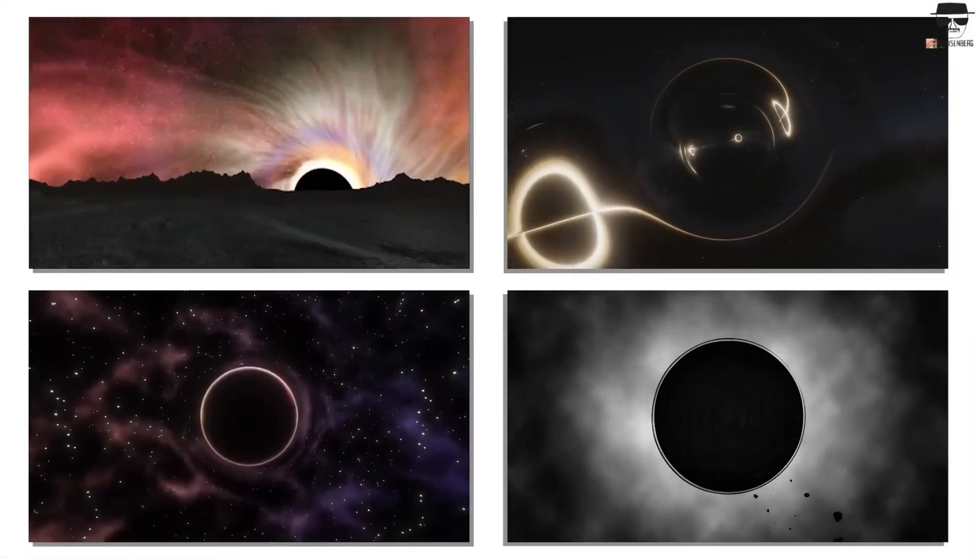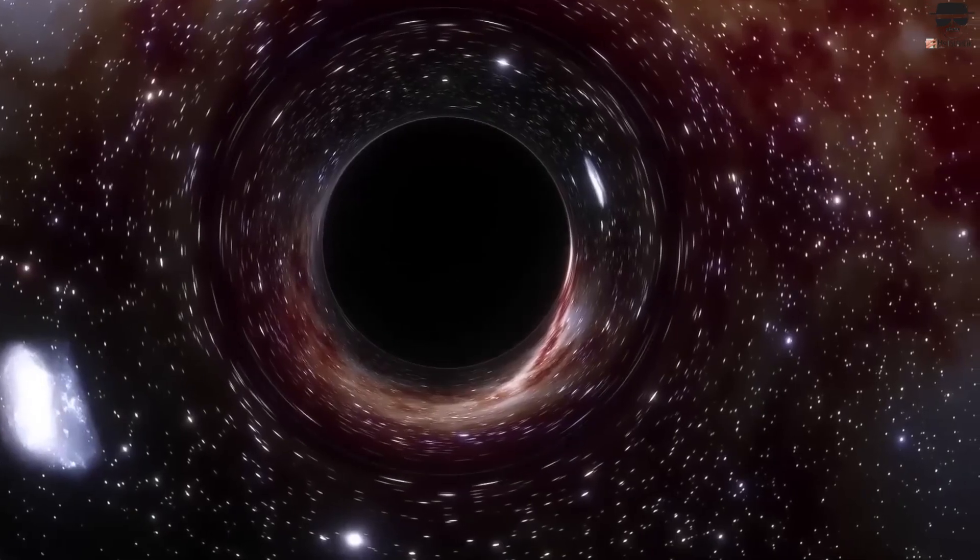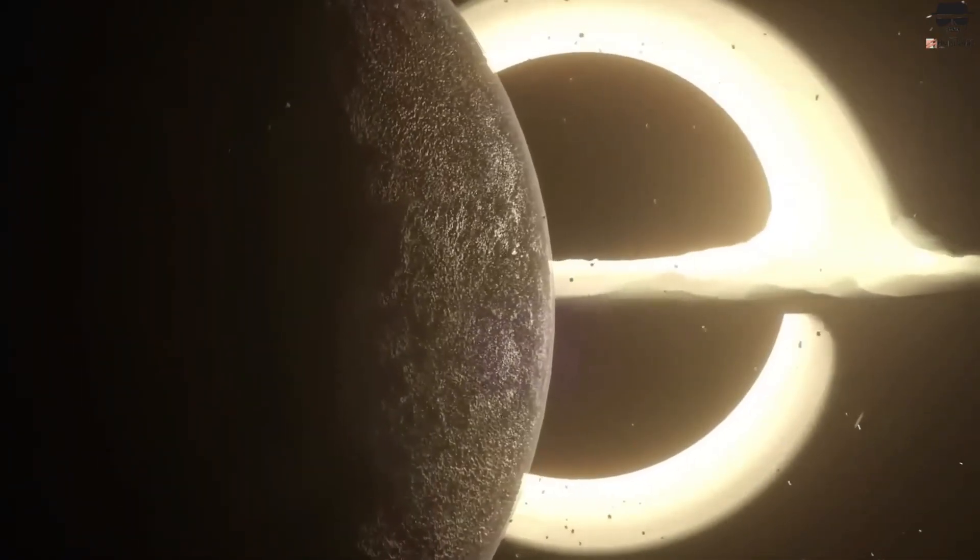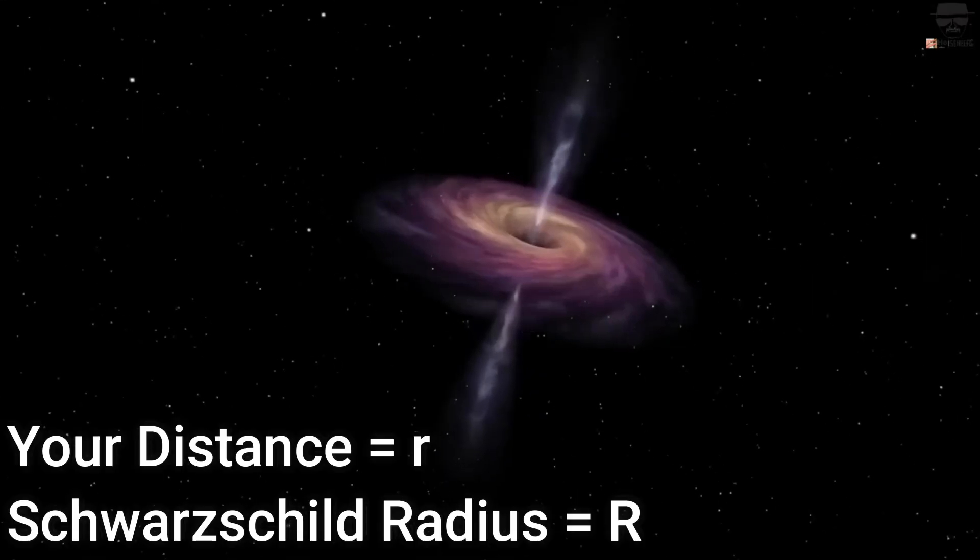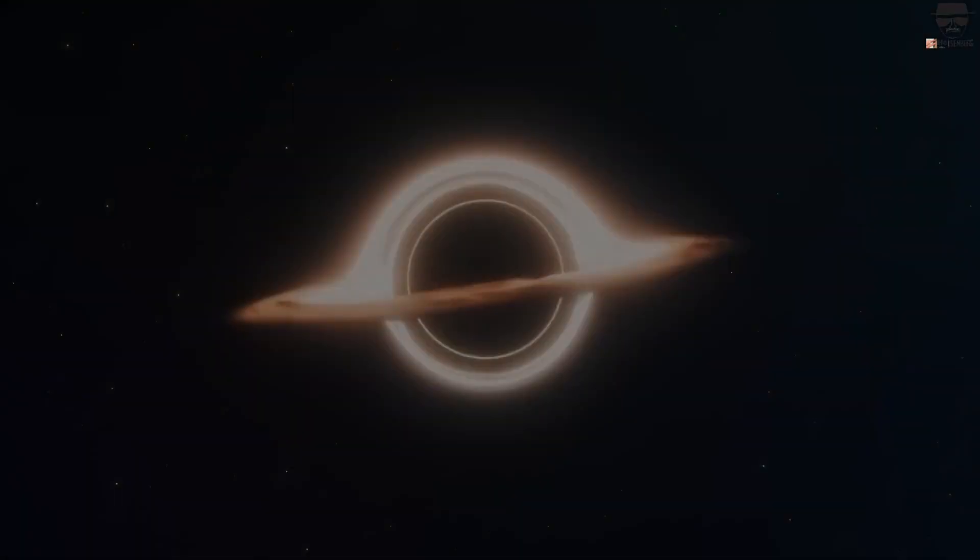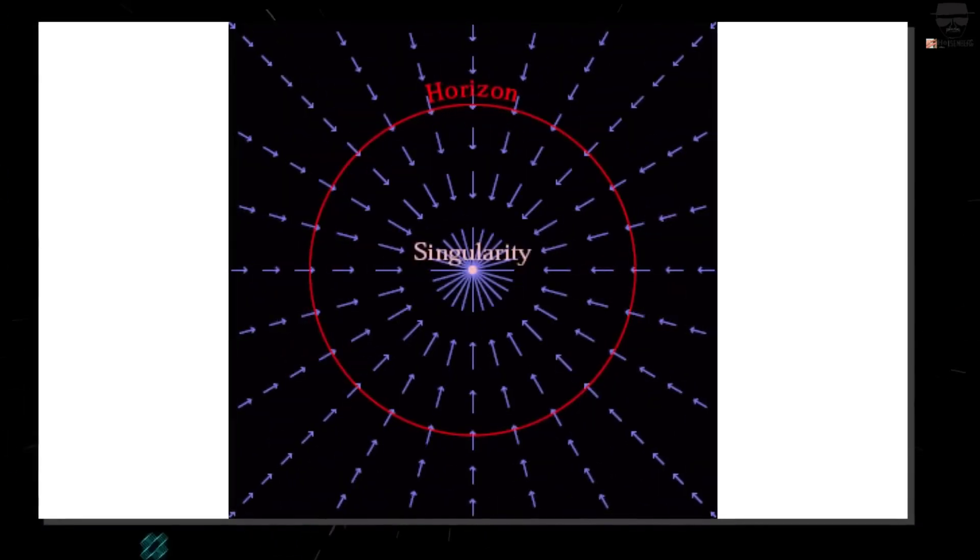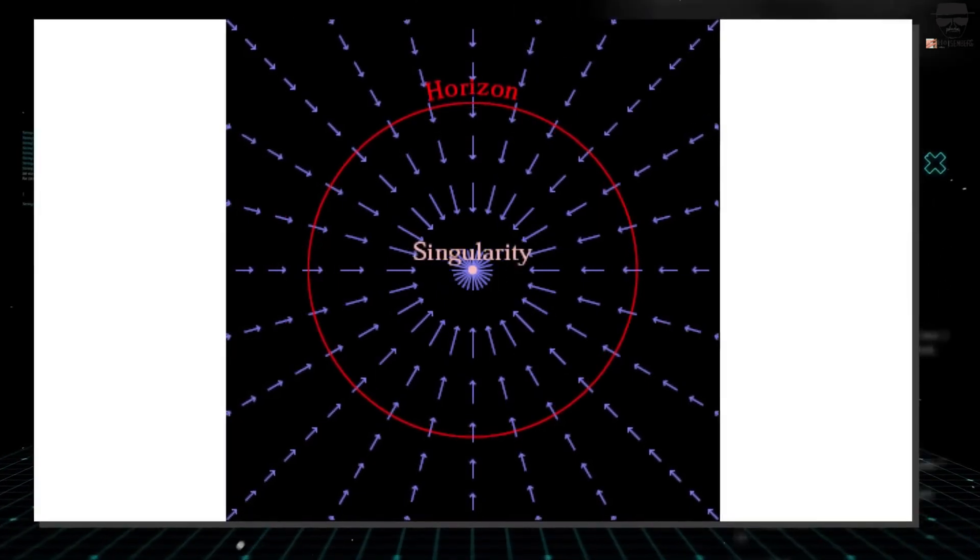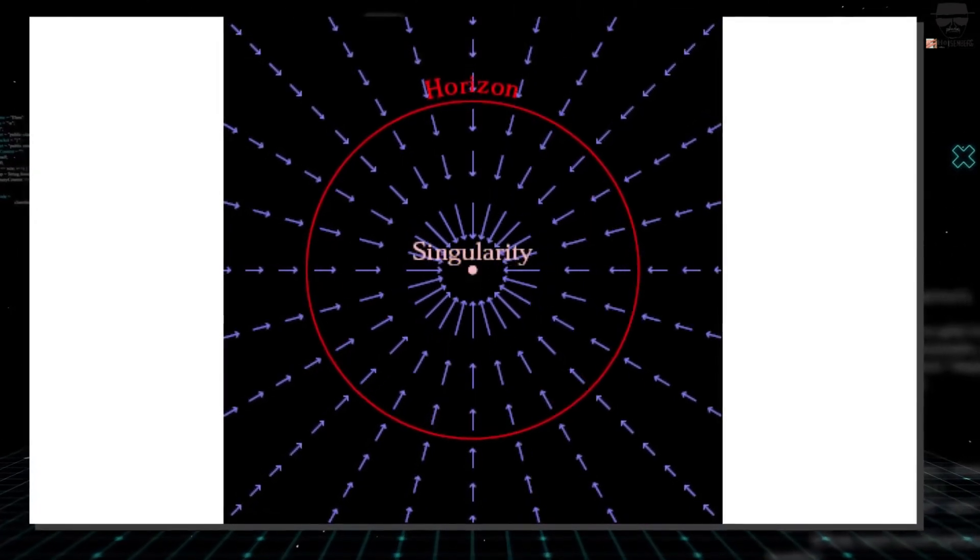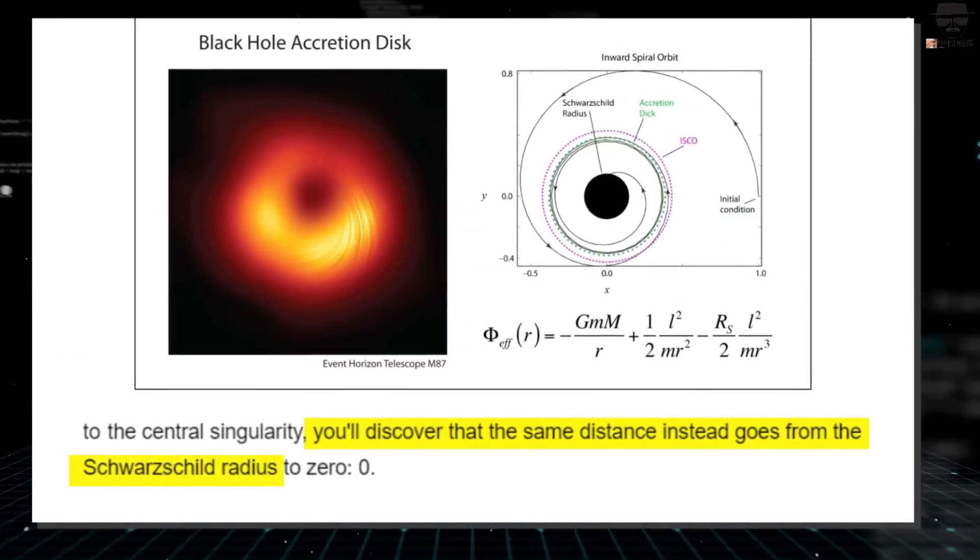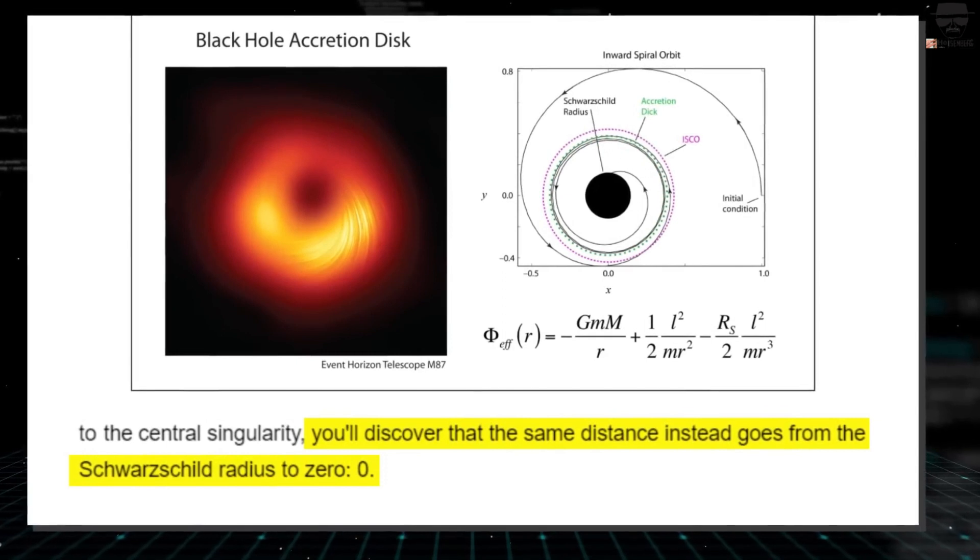Something remarkable happens when you look at the equations that govern a black hole as well. If you start just outside the event horizon and escape to an infinite distance away from the black hole, you'll find that your distance, R, goes from R, the Schwarzschild radius, to infinity. On the other hand, if you start just inside the event horizon and track your distance from the black hole to the central singularity, you'll find that same distance, R, instead goes from R, the Schwarzschild radius, to zero.